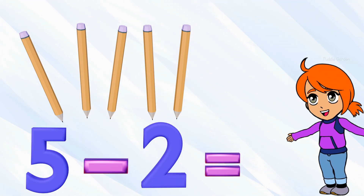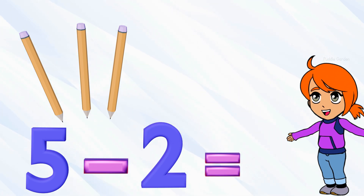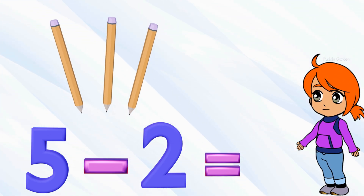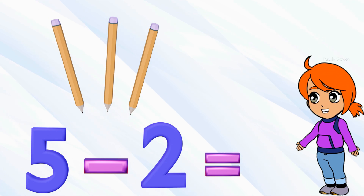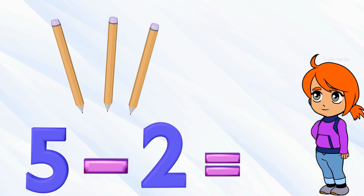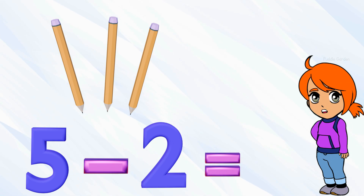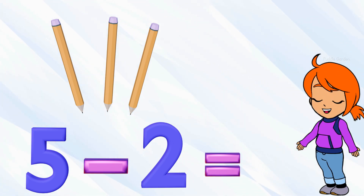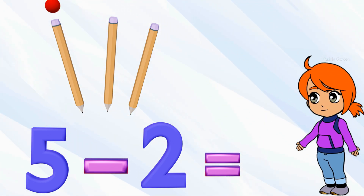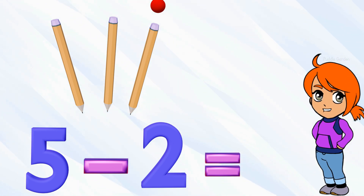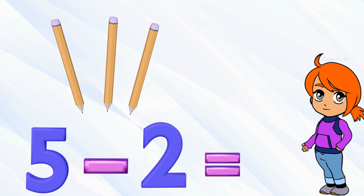For example, if I had five pencils and I wanted to take two away — five pencils, and I want to take two away — how many are left? We started with five and we took away two. We subtracted two. Let's count how many are left: one, two, three. So five subtract two equals three.